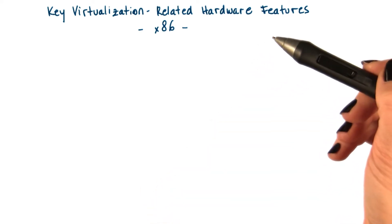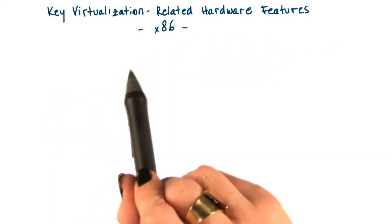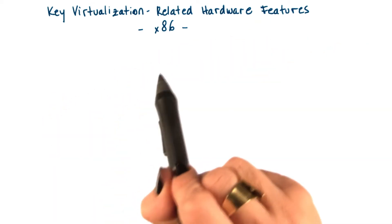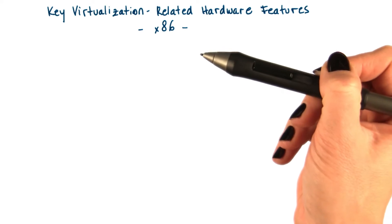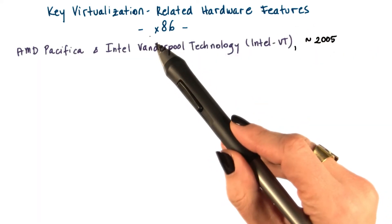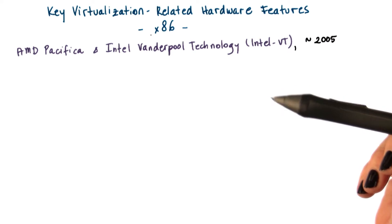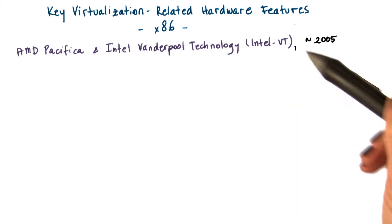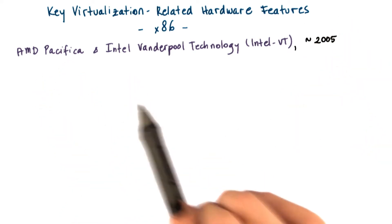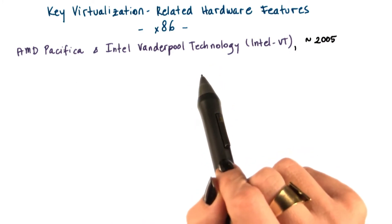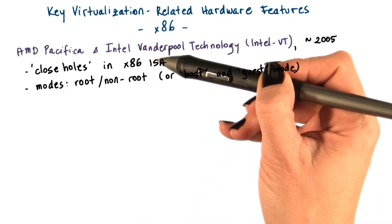Hardware companies responded and modified their architectures to make them more appropriate for virtualization. In the x86 world, these virtualization-friendly architectures started appearing around 2005 with AMD Pacifica and Intel's Vanderpool technology, or Intel VT for short.